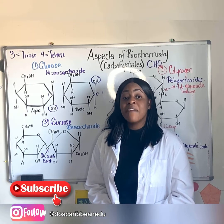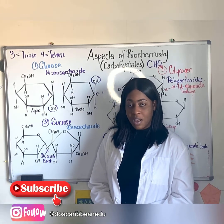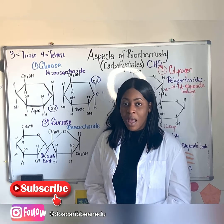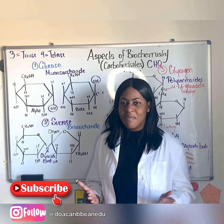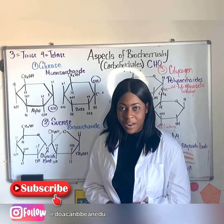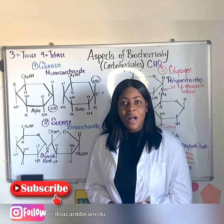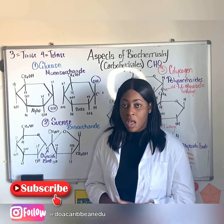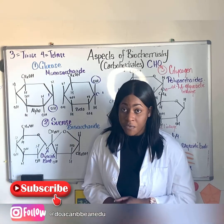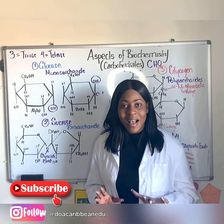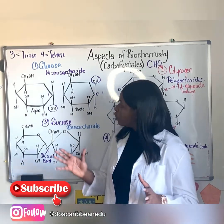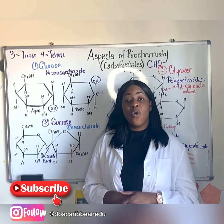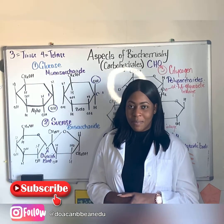Carbohydrates are a diverse group of compounds. You can find them in the foods that you eat, stored in plants as starch, and stored in our liver and muscle cells as glycogen. Today I'll be demonstrating the ways how you can classify carbohydrates, the two major reactions of carbohydrates, and lastly I'll be looking at the structure and functions of the five major carbohydrates that you must know for your upcoming CAPE examination.